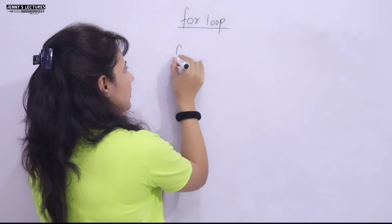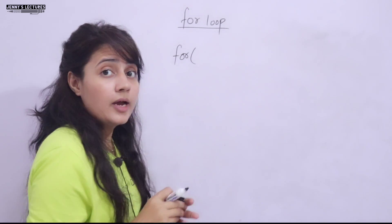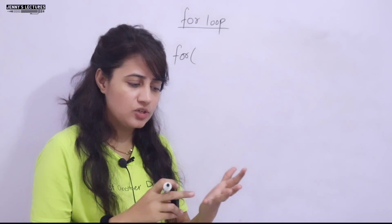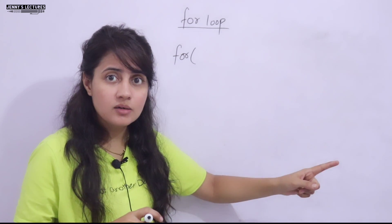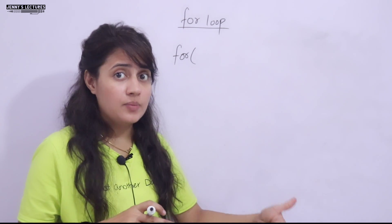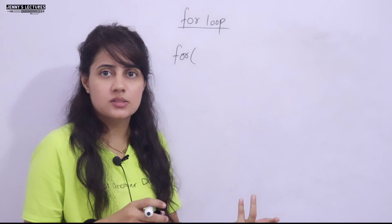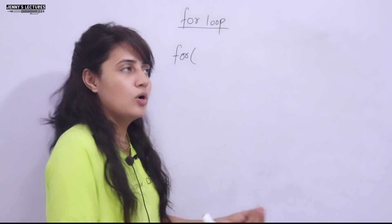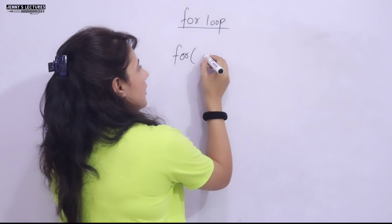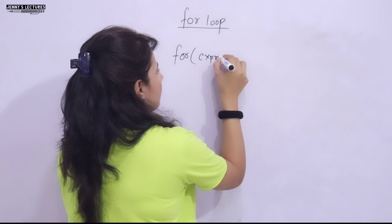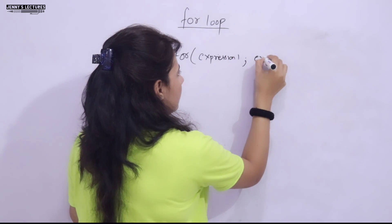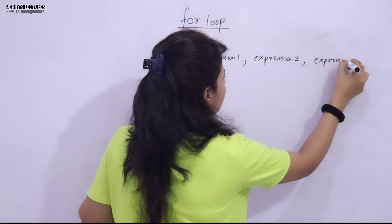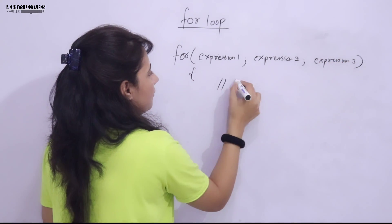The general syntax of the for loop: simply write 'for'. As I mentioned in the previous video, there are three basic things in each loop — initialization (where the loop starts), the termination condition (where the loop ends), and update. The for loop syntax is: for(expression1; expression2; expression3) — that is, initialization, condition, and update, all separated by semicolons.